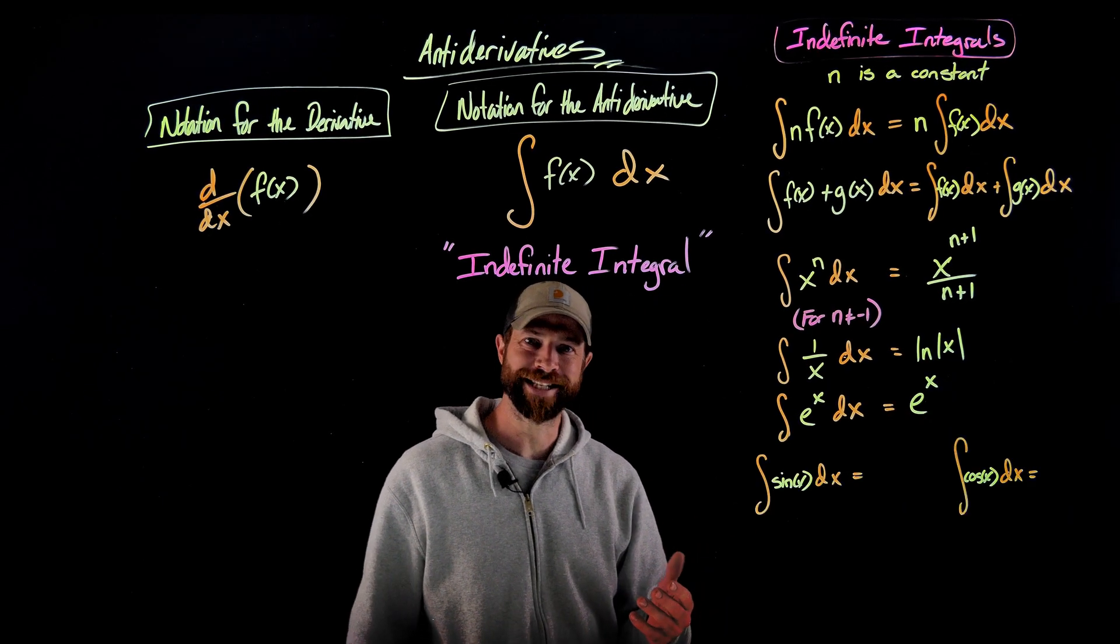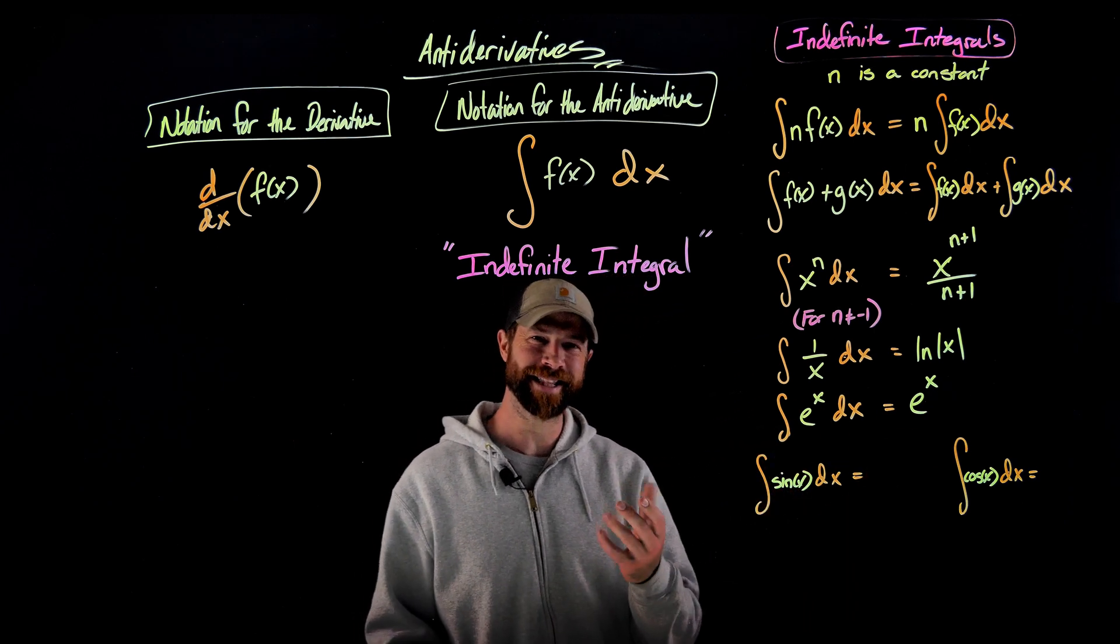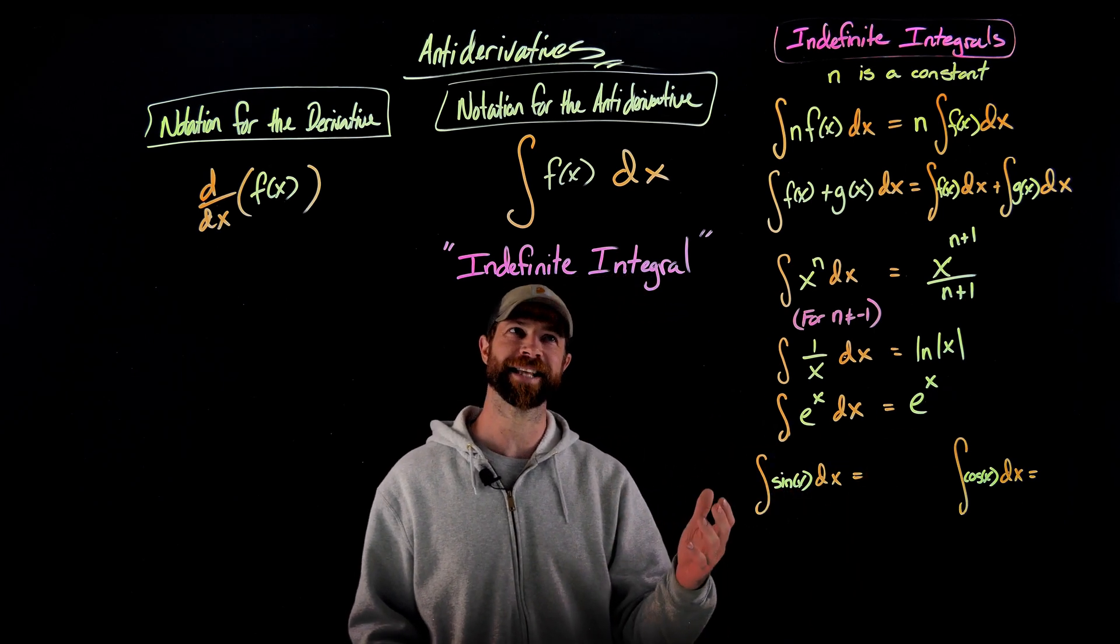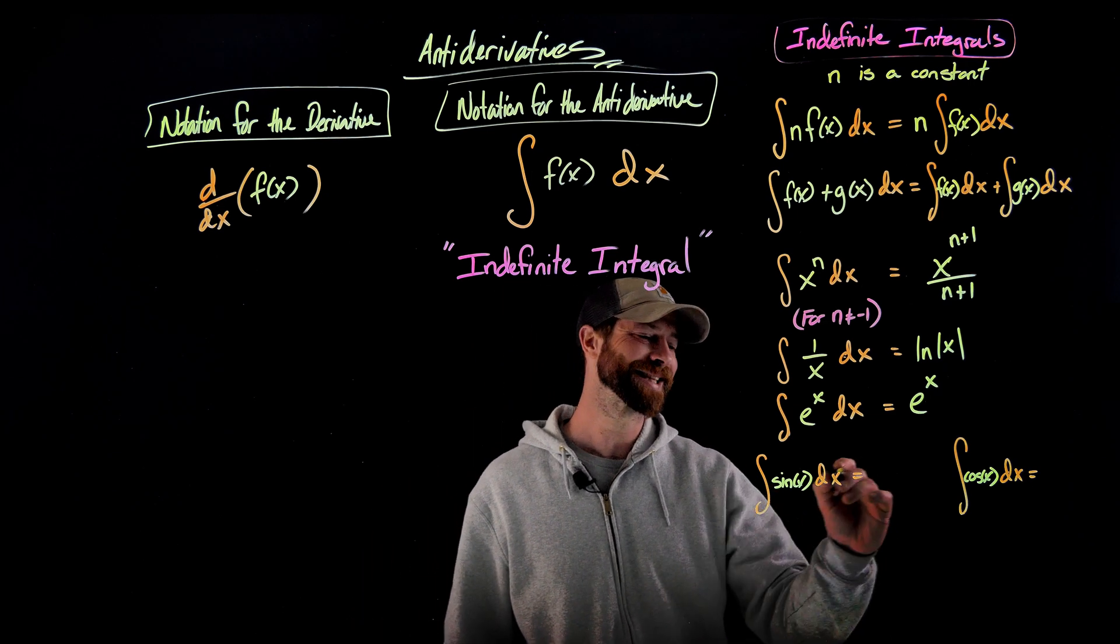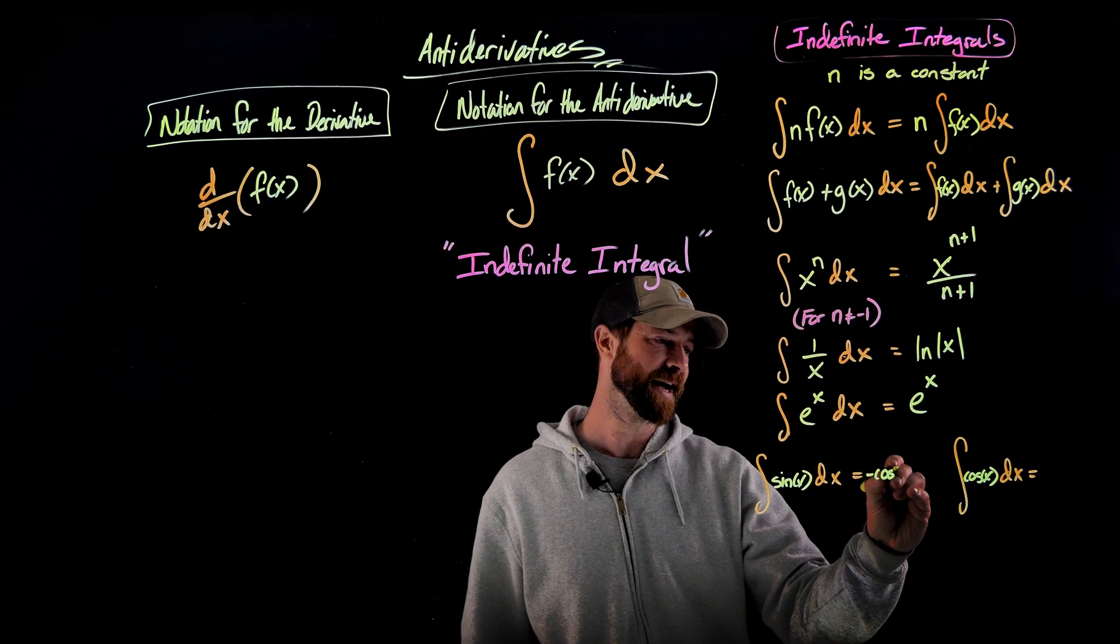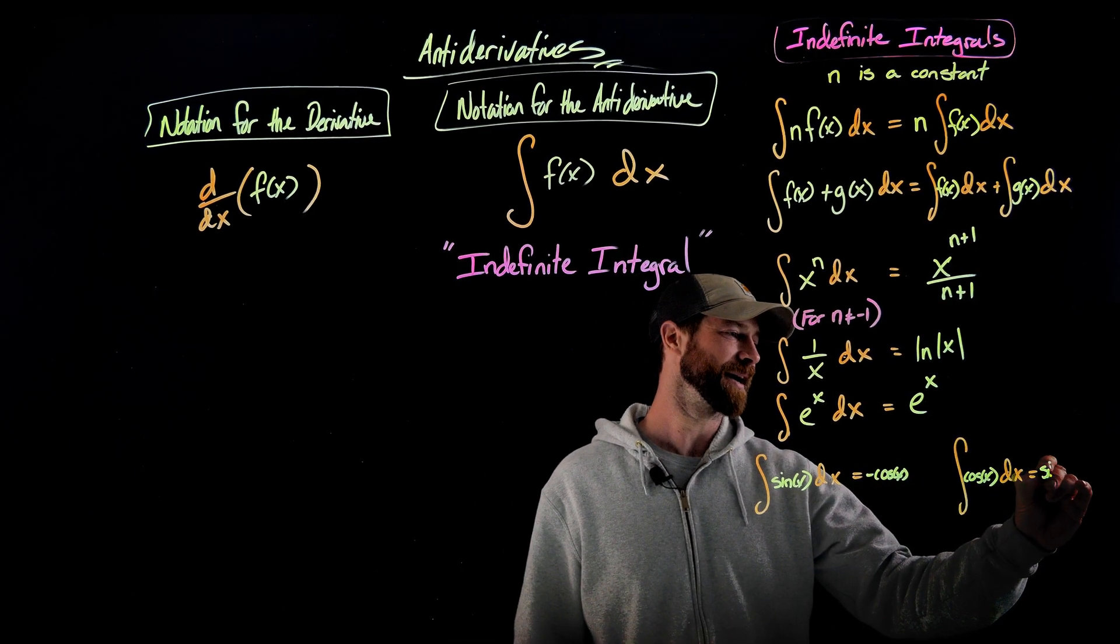And just to do these both the same time, the indefinite integrals of sine x and cosine of x. Again, this is going to be a little bit different when we do this, because the negative that we get when we do this is in the opposite. But the integral of sine of x is negative cosine of x. And the integral for cosine of x is simply sine of x.